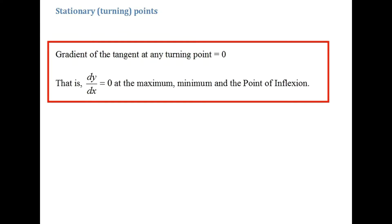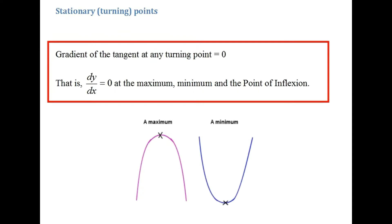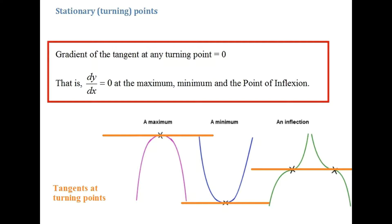That is, dy/dx equals zero at the maximum, minimum, and point of inflection. These refer to the kinds of turning points we have. Here is a maximum shape with the maximum point highlighted. Here is a minimum shape with the minimum point highlighted. And here is the point of inflection — you can have either shape — with the point of inflection highlighted. If you draw a tangent at these points you'll get a horizontal line, and the gradient of that tangent equates to zero.